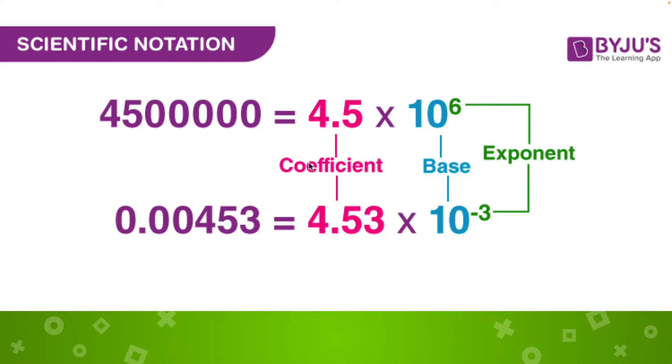We can see there's a coefficient on each one. So this is the number, and it's always going to have a number between 1 and, it says between 1 and 10, but it's between 1 and 9.